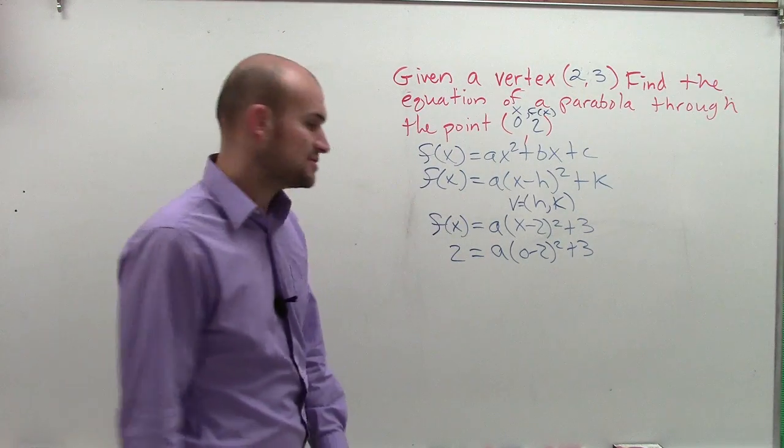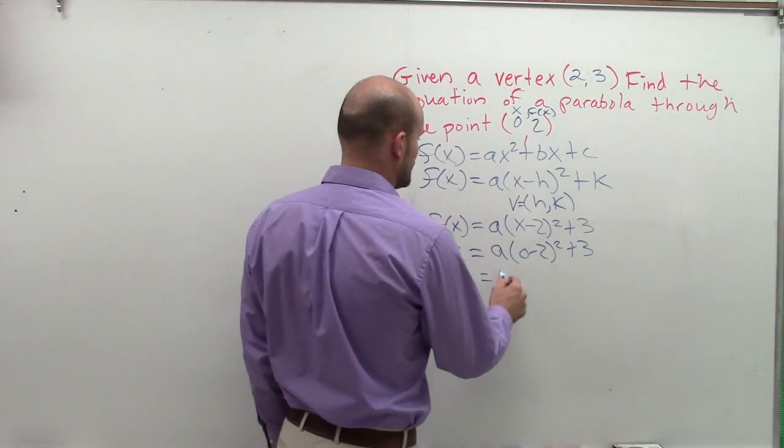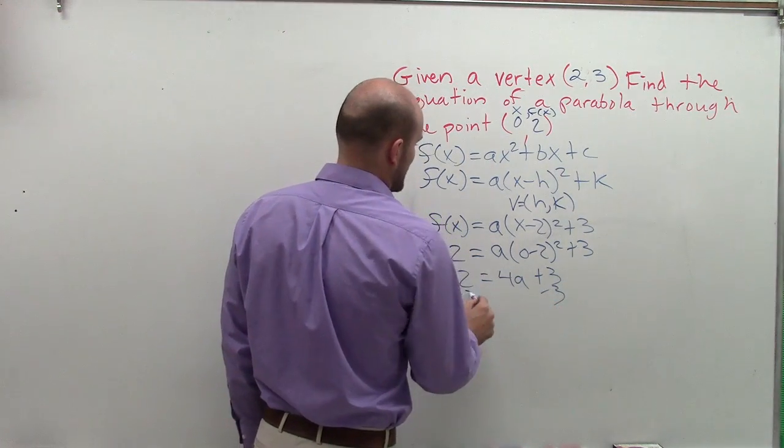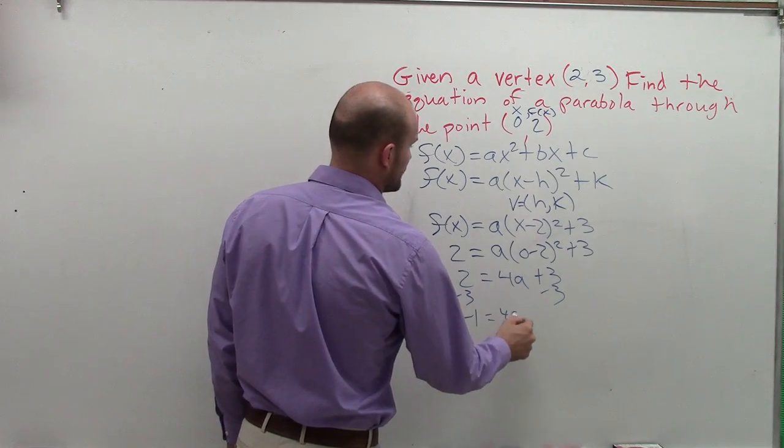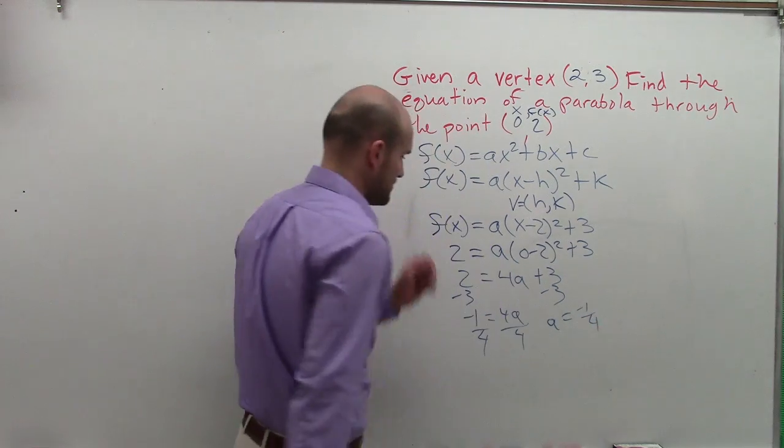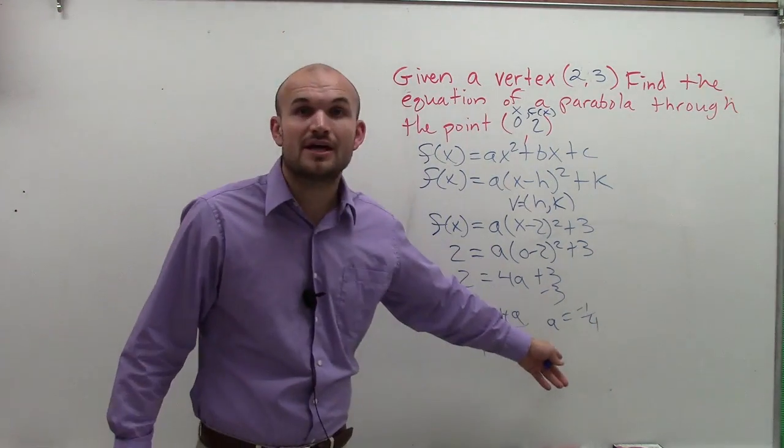0 minus 2 is negative 2. Negative 2 squared is 4. So 2 equals 4a, I'll switch those around, plus 3. Subtract 3. Get negative 1 equals 4a. Divide by 4. A equals negative 1 fourth. All right? So now I know the value of a.